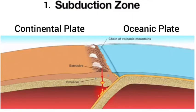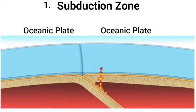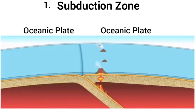The first type is the oceanic-continental plate subduction zone. These are plate zones in which two plates converge and the denser oceanic plate is forced to go beneath the less dense continental plate. The best example lies along the South American western margin, where the oceanic Nazca plate is subducting beneath the continental South American plate.